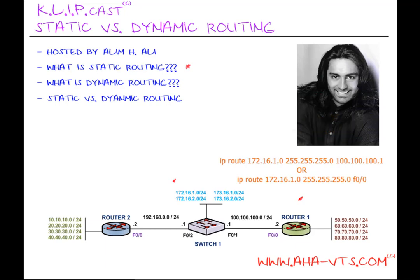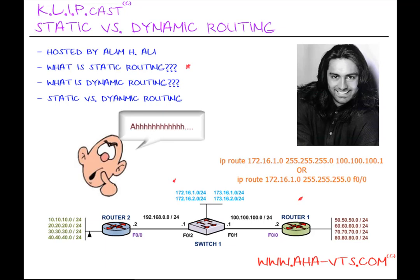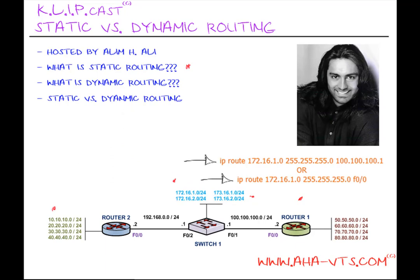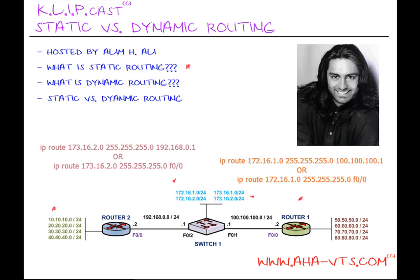One question you may be asking yourself is: what about the networks that sit behind Router 2? How do we get those networks to communicate with the network behind Switch 1 — 173.16.2.0/24? Remember, static routes are one-way communication paths. So whatever commands or syntax we use to get networks behind Router 1 to communicate with 173.16.1.0/24, we will have to do somewhat the same for networks behind Router 2 to communicate with 173.16.2.0/24. Here is an example of those configurations.